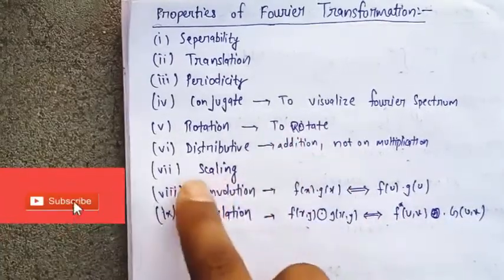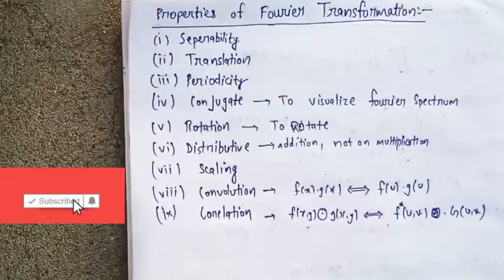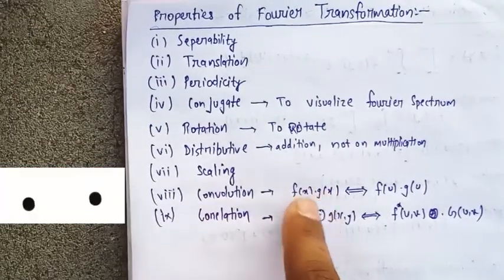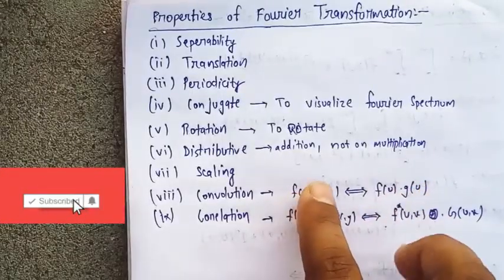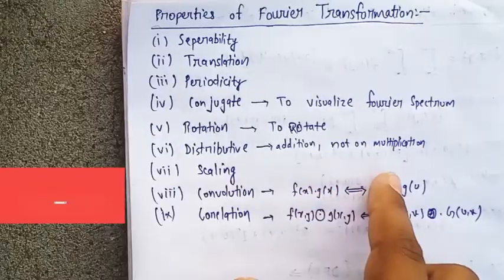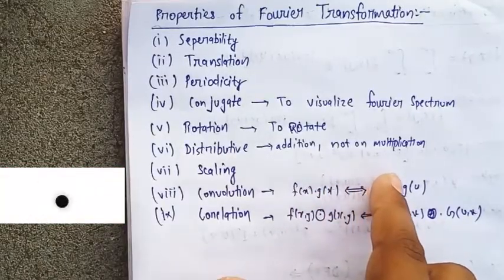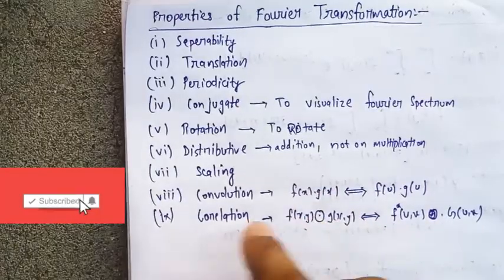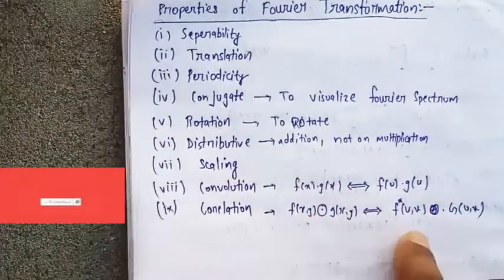Scaling means you can scale up and scale down, it's that simple. Convolution means if you convert a DFT, you will get this one, and if you reverse to IDFT, that's all. Correlation - if you do it, you will get the star of u,v and g of u,v in a two-variable form.